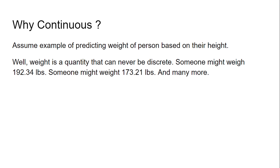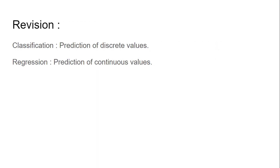Another example is Bitcoin prediction. If you predict the Bitcoin value, that is a continuous output — so it's a regression problem. But if you predict whether Bitcoin is going to fall or rise — yes or no — then it is a classification algorithm. Similarly, predicting the temperature of a particular day is a regression problem — continuous values. Predicting whether it will rain tomorrow is yes or no — discrete — so that is classification.